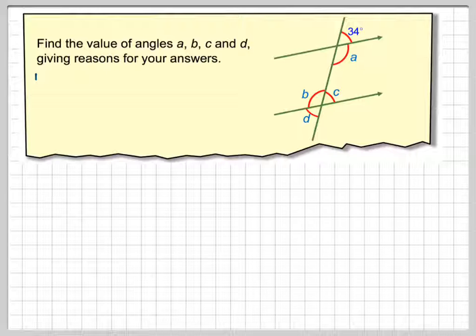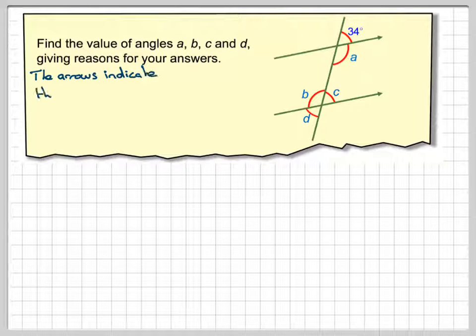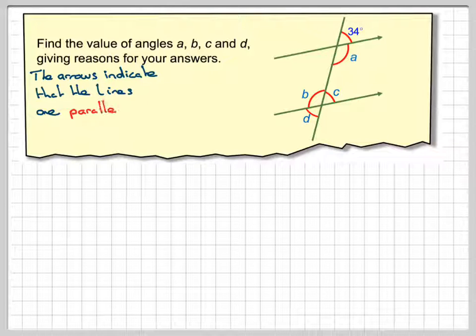Now, there are more than one way of doing this, but we've got to remember that these two lines with arrows indicate that the lines are parallel. Parallel means they never get further apart or closer to each other. They always remain the same distance apart.